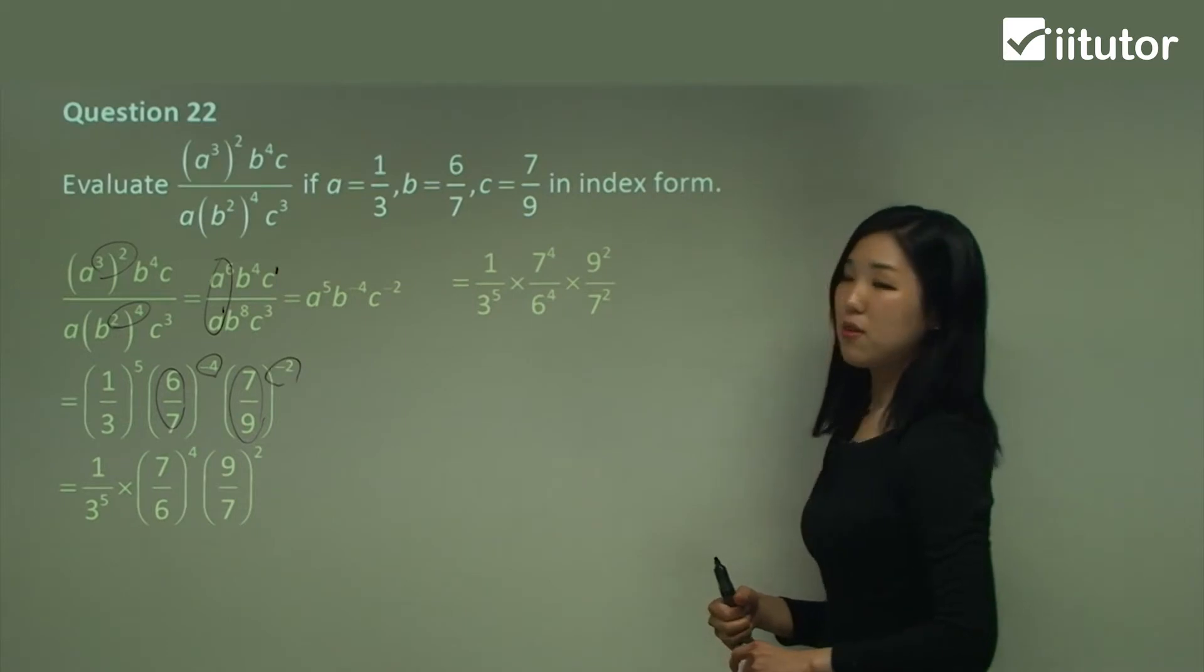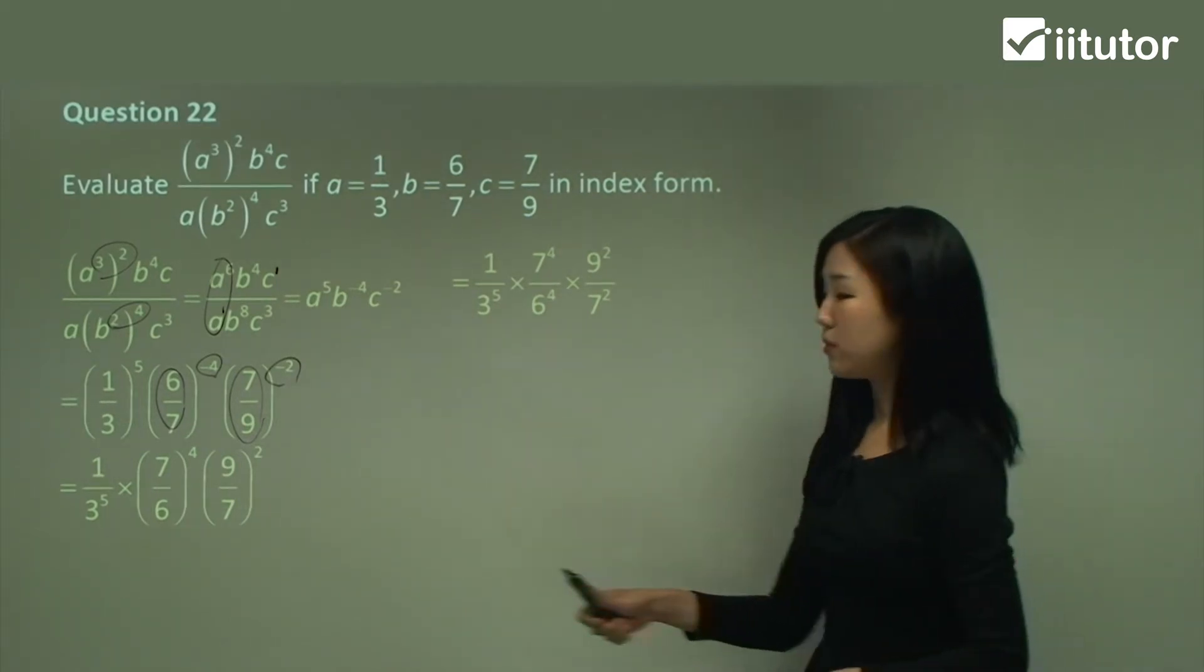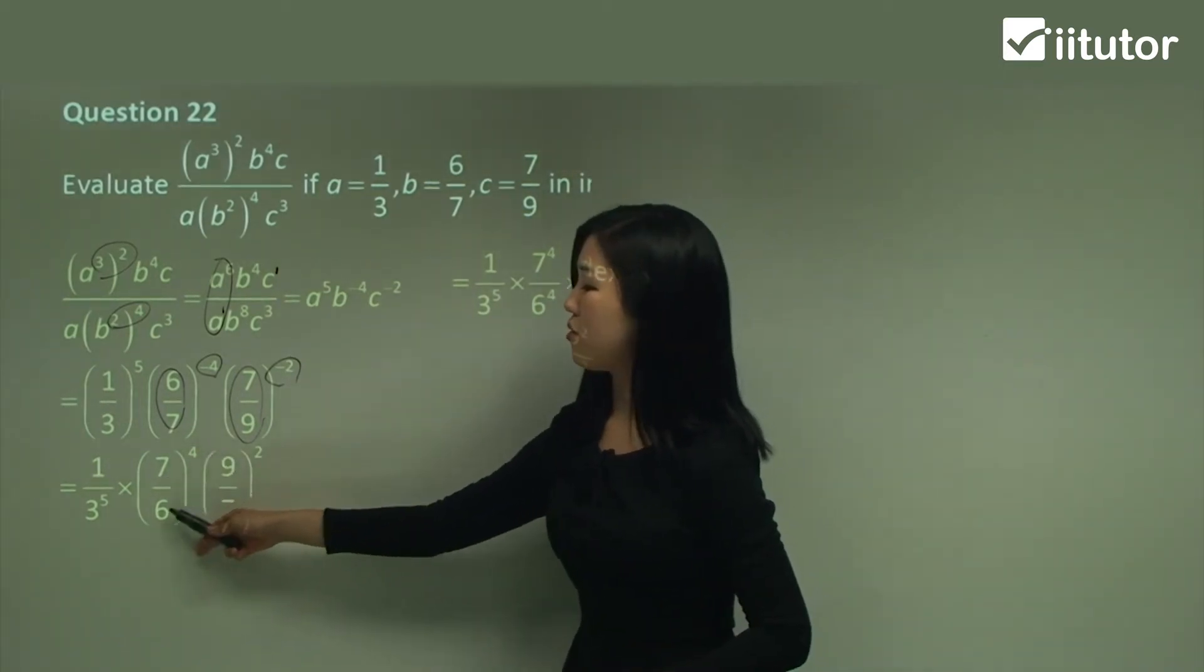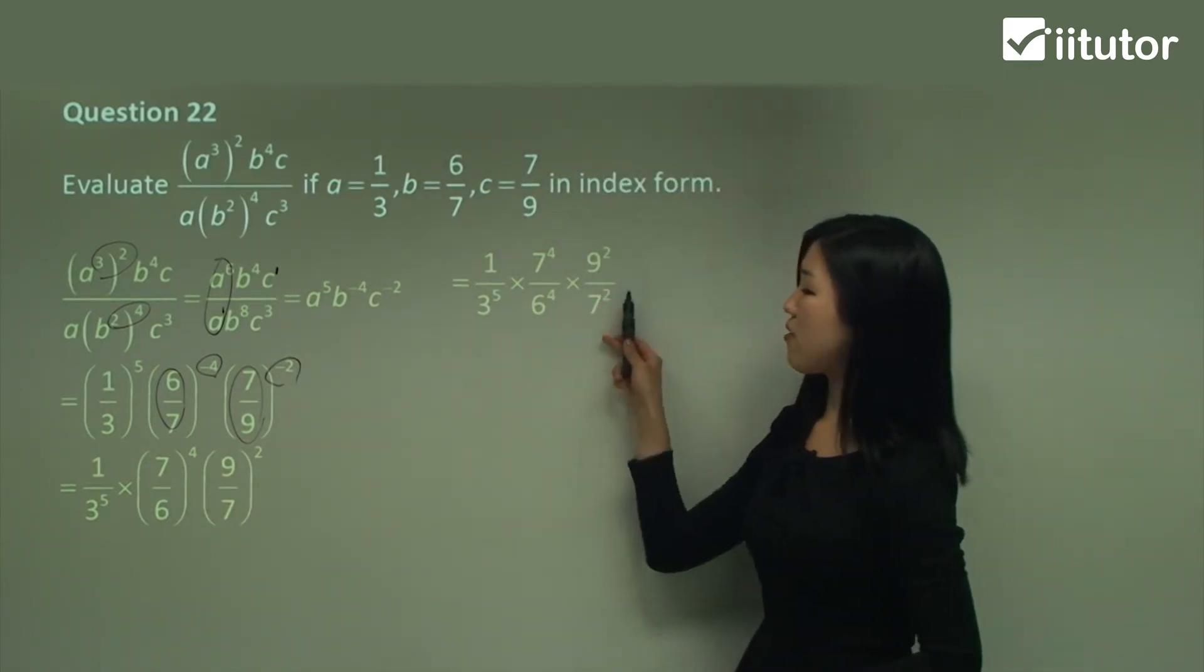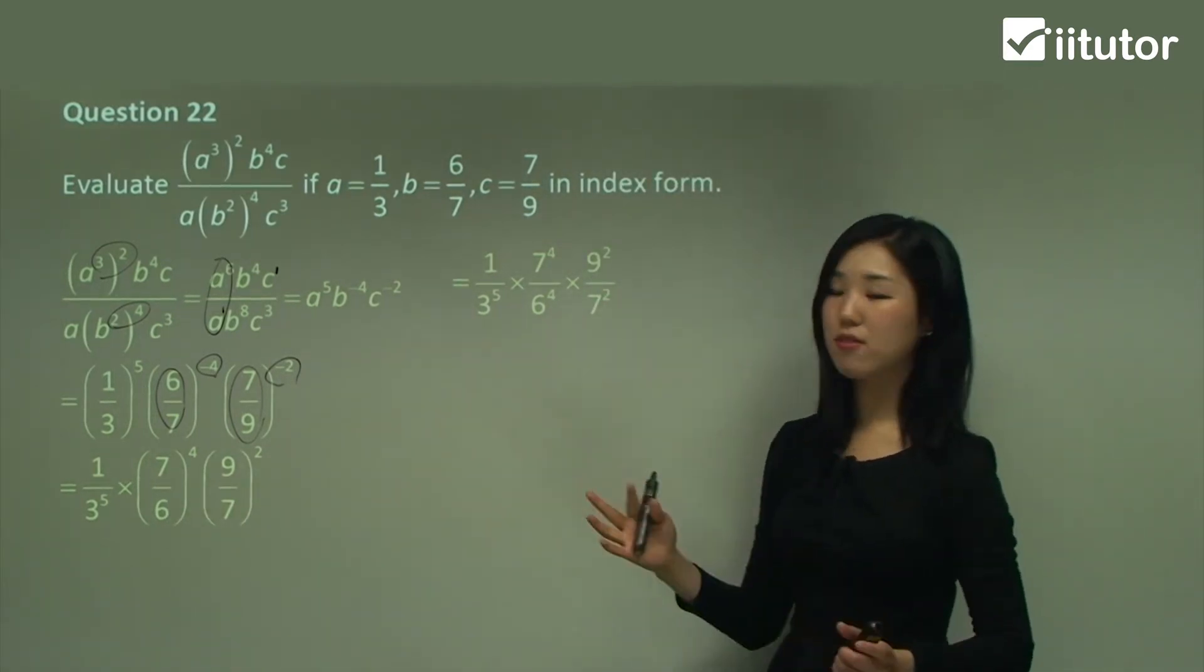Now I can get rid of the brackets by multiplying everything to the top and bottom. So we have 7 to the power of 4, 6 to the power of 4 here, and 9 squared over 7 squared for that one. So we get rid of the brackets.